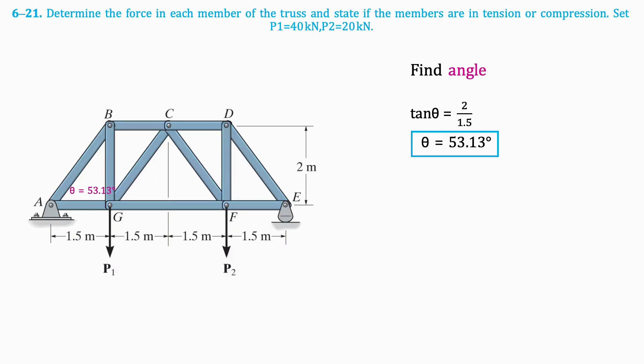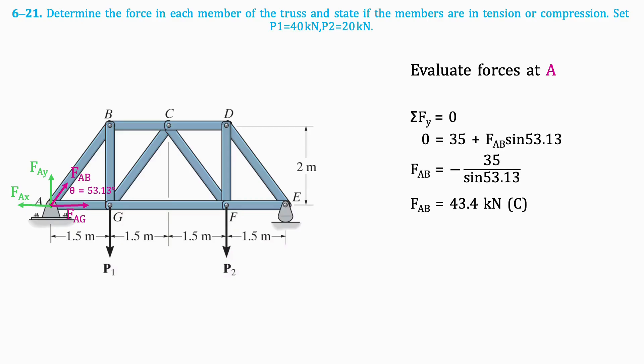Knowing this angle, we can now solve for the forces at joint A. Taking the sum of vertical forces gives that FAB is equal to 43.4 kN in compression.